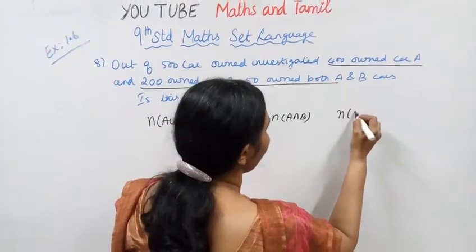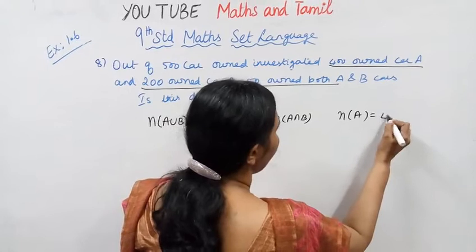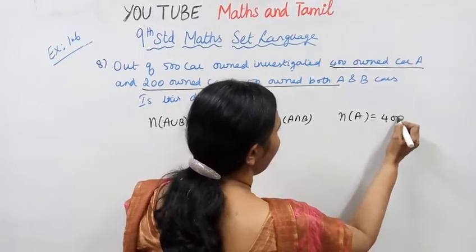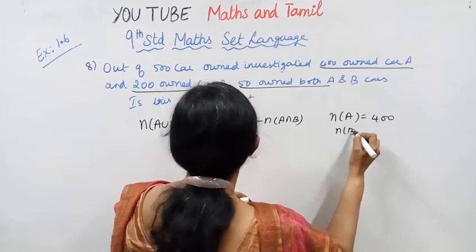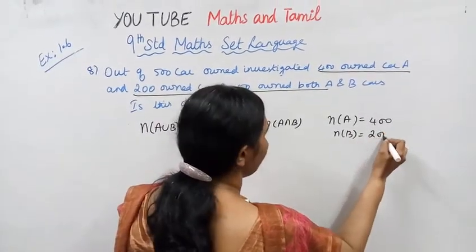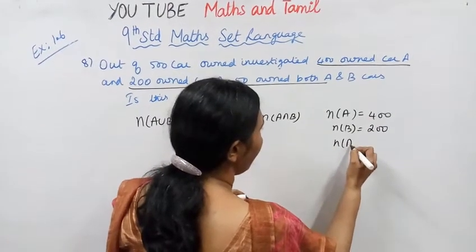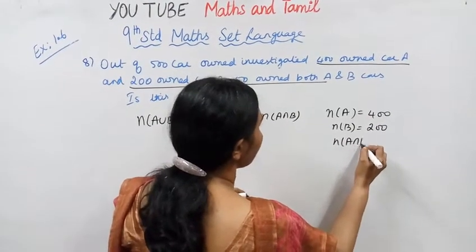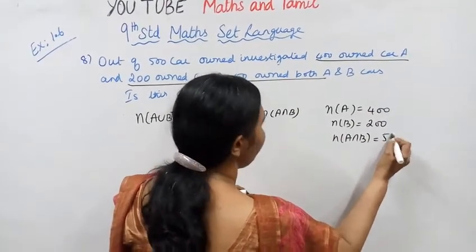N(A) equals 400. N(B) equals 200. N(A∩B) equals 50.